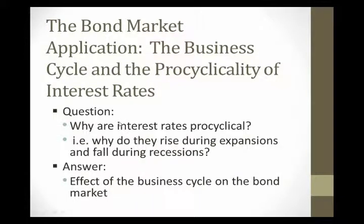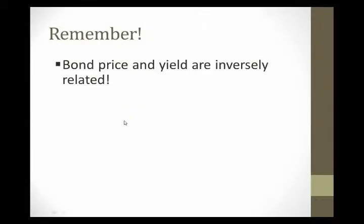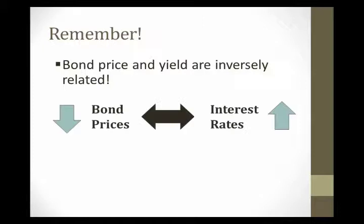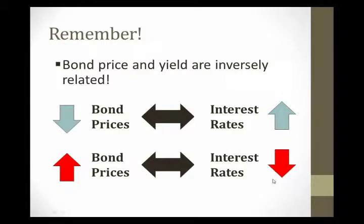Let's see how. As we proceed with this bond market example, let's remind ourselves that bond price and yield are inversely related. In other words, any equilibrium change that leads to a lower bond price means that interest rates are higher. Any equilibrium change that leads to a higher bond price means that interest rates are lower.